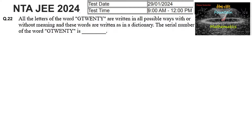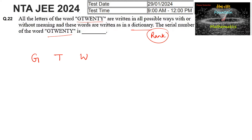All the letters of the word TWENTY are written in all possible ways with or without meaning, and these words are written as in a dictionary. Then the serial number — that is, the rank — of the word TWENTY is being asked. So here we are finding the rank of the word TWENTY. Let us write G, T, W, E, N, T, Y.